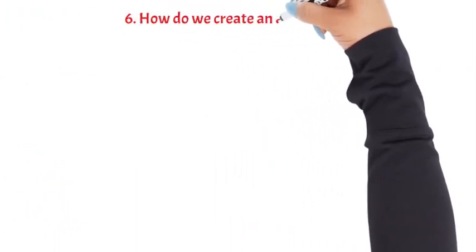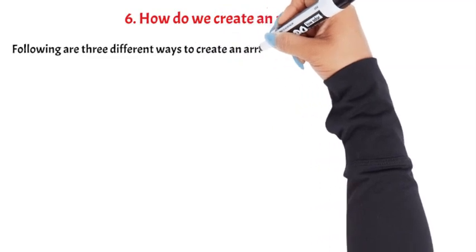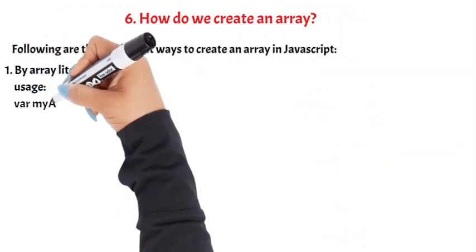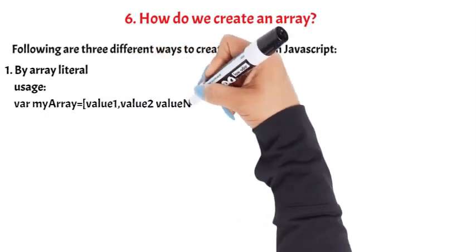How do we create an array? Following are three different ways to create an array in JavaScript: 1. By array literal - var myVar = [value1, value2, valueN]; 2. By creating instance of array - var myVar = new Array();